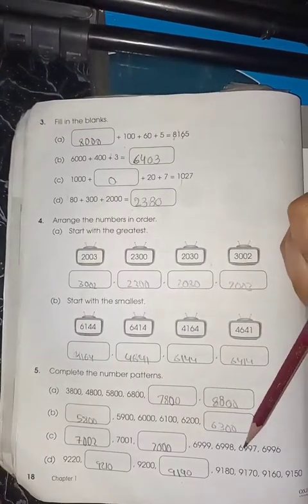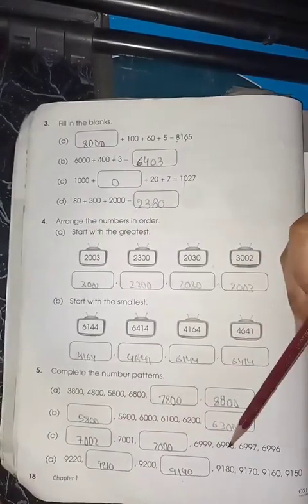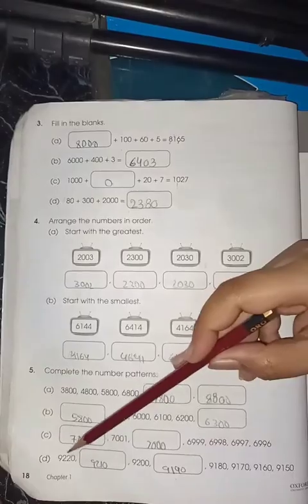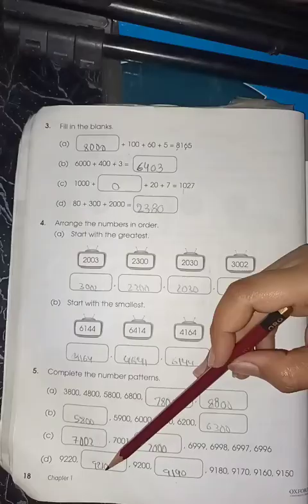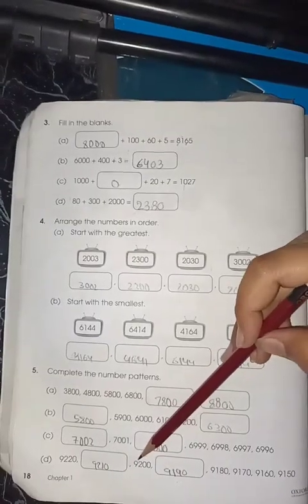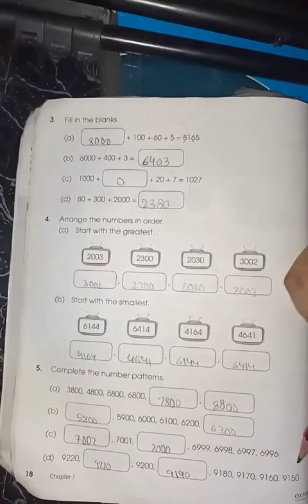Now again, 2 digit number gaps: 2, 1, 0, 9, 8, 7, 6. Then 9220, 9210, 9200, 9190.